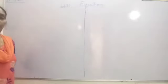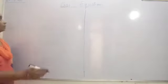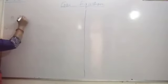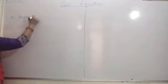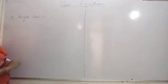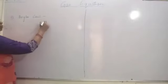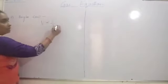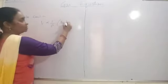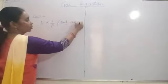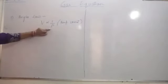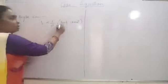Good morning children. Earlier in this chapter, we have studied two laws. The first law was Boyle's law, which said that volume is inversely proportional to pressure when the temperature is constant. So volume and pressure have an inverse relationship, with temperature remaining constant.